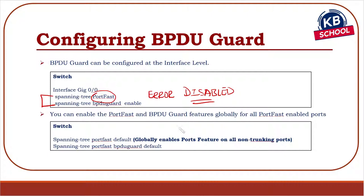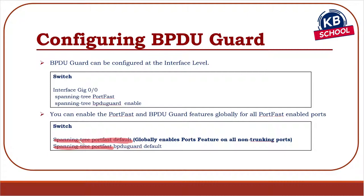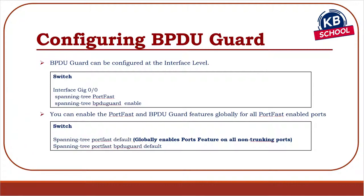You can also enable PortFast globally. If you want PortFast enabled on all non-trunking ports — basically any port not connected to another switch — you can do it globally by saying 'spanning-tree portfast default.' Any port not in trunking mode will have PortFast enabled. By doing 'spanning-tree portfast bpduguard default,' you also enable the BPDU Guard feature on those PortFast-enabled ports. So you can either do it globally or under the interface.